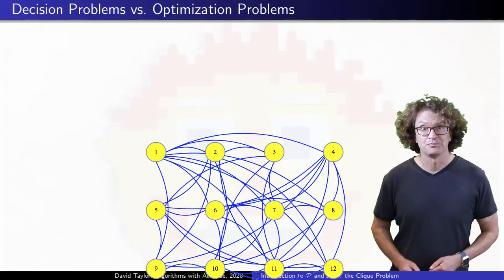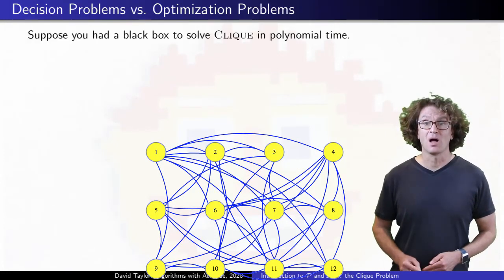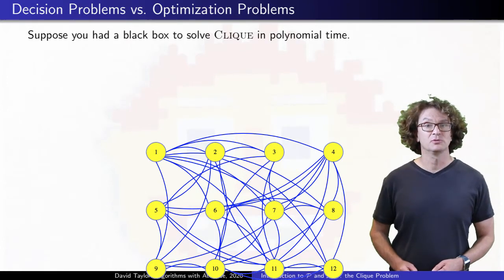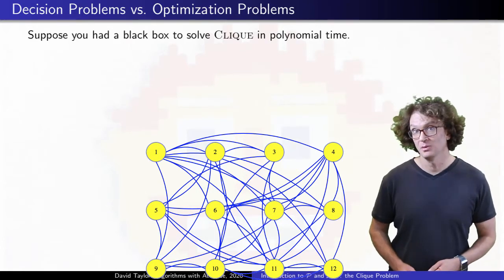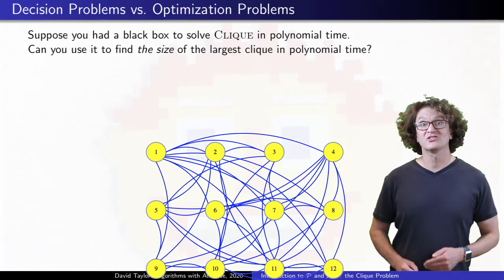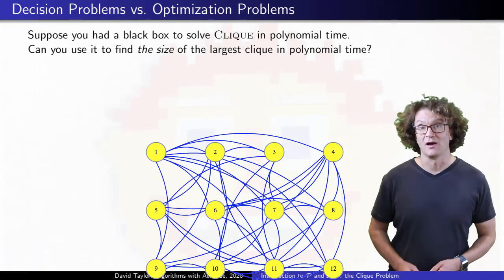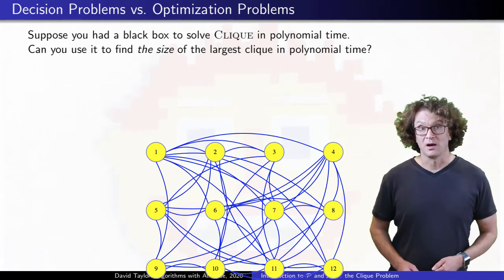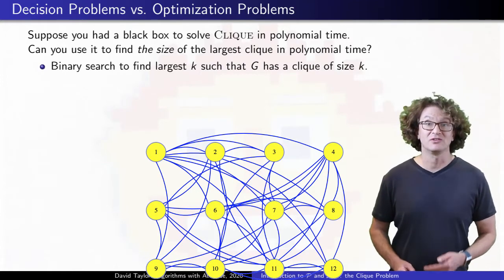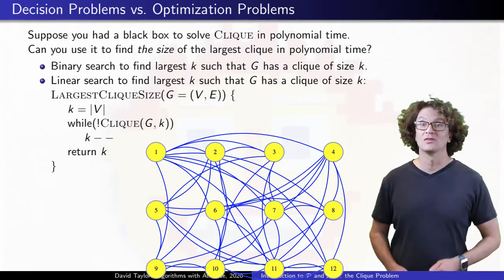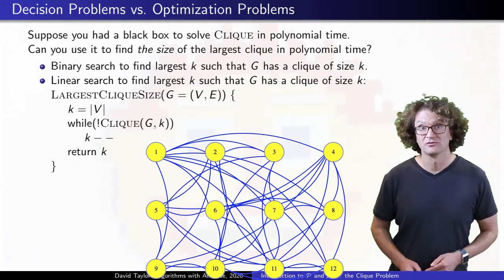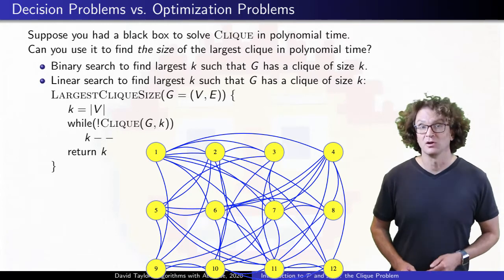Let's consider the clique problem. Suppose that you had a polynomial time black box that could solve the decision version. Can that help you to solve any optimization problem? A simple optimization version might ask, what is the size of the largest clique in a graph? You could use the black box in a binary search to find the largest size, or you could just be lazy and do a linear search. Either way, you run the polynomial time black box a polynomial number of times, so it takes polynomial time to answer.